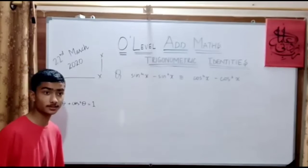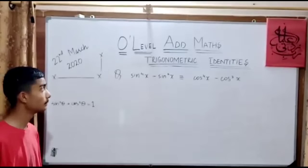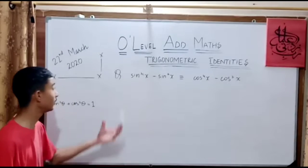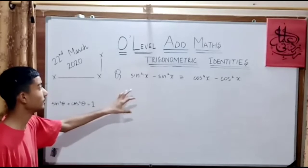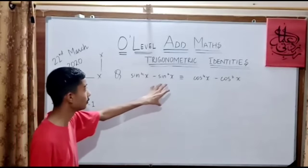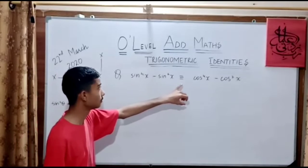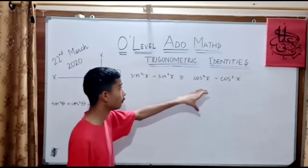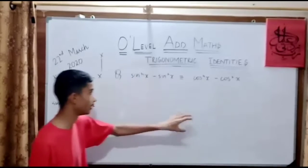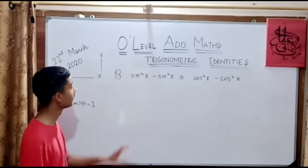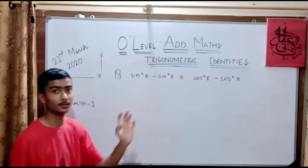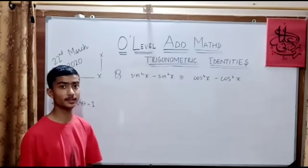Assalamu alaikum. Today we are going to discuss the O-Level Mathematics, the topic of Trigonometric Identities. We have one example in front of us: sin to the power 4x minus sin squared x is equal to cos 4x minus cos 2x. We have to show this identity — we have to prove that the right hand side is equal to the left hand side.